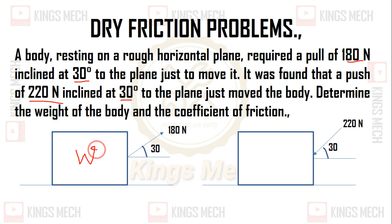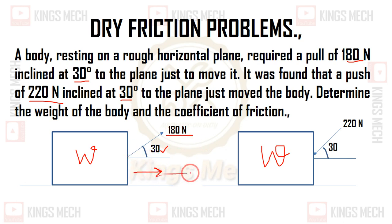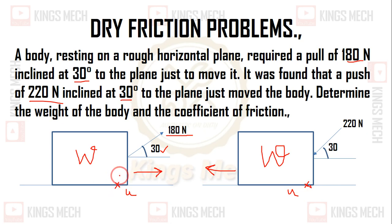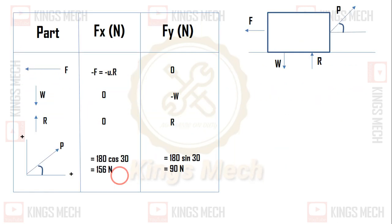Let us see how the weight is W. The applied force is 180 Newton at 30 degrees to the plane. The weight W acts downwards, and there is a reaction support from the plane. The plane causes motion at a certain inclination of 30 degrees.